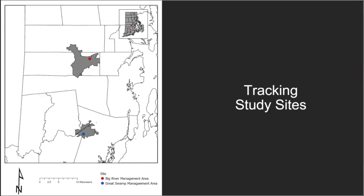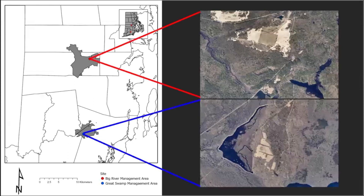To track these individuals, we had two field sites. Both are management areas actively managed for early successional forest growth by RIDEM. They are Great Swamp and Big River. You can see that they're pretty heavily dominated by central grasslands, and as you go outward you can see the shrubby areas and then the mature forest — there's a lot of habitat mosaic at these sites.